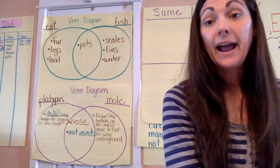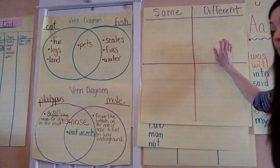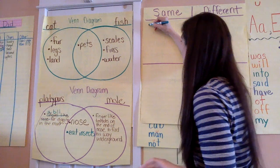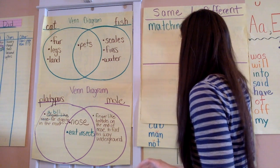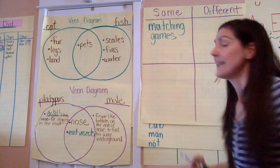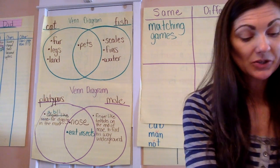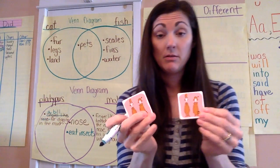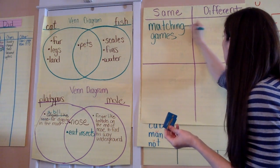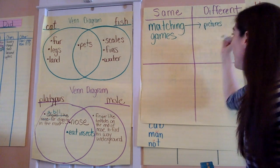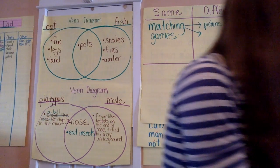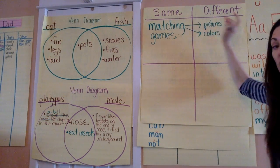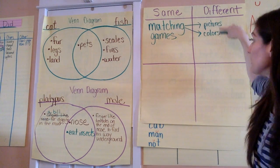So let's take a minute now to say, how are these games the same and how are they different? Well, one way that these games are the same is that they're both matching games — you have to match in these games. Now, something that's different is in the Dr. Seuss game, you're matching pictures together. But in the paintbrush game, you're matching colors. So they're the same in that they're both matching games, but one matches pictures and the other matches colors.